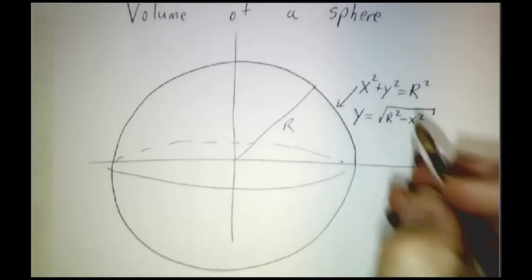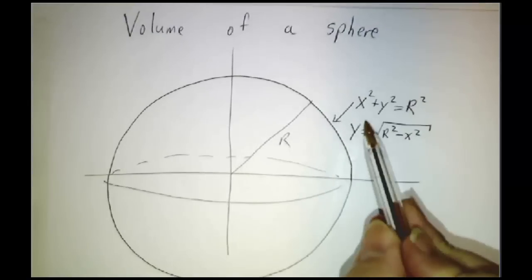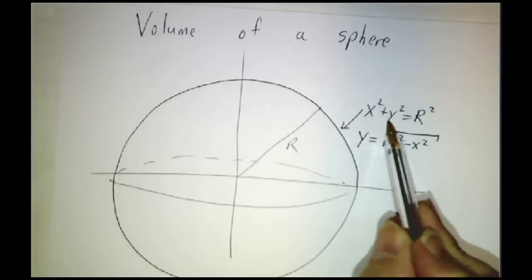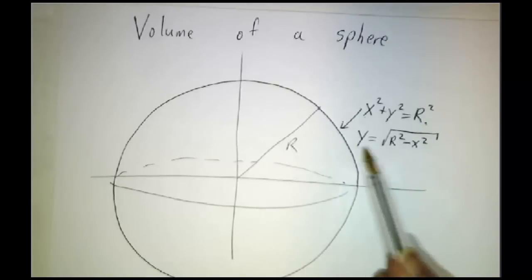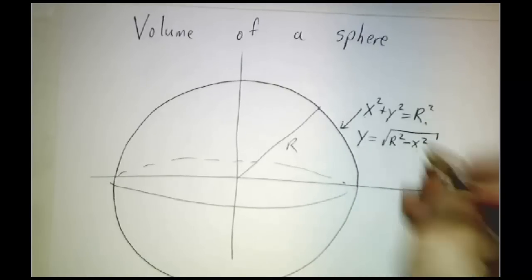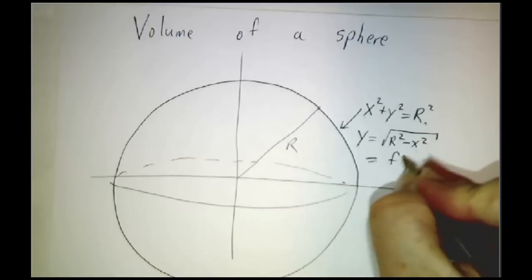And the way we do that is we say, the semicircle, the equation of the semicircle is x squared plus y squared equals r squared. Solve for y and that gives you y is the square root of r squared minus x squared. And that's what we call f(x).